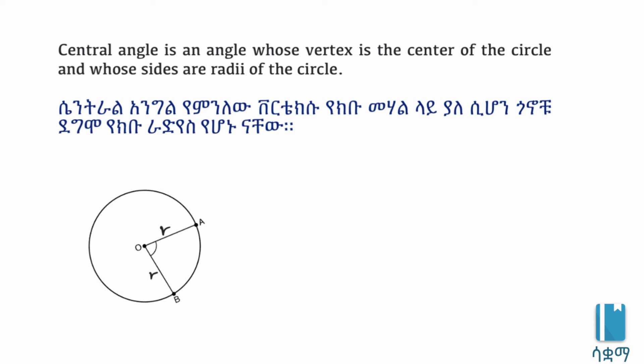Rather than just the radius, it is the radius of the circle. This is the radius of the circle, which means the vertex will be central to the circle. The point is the center of the circle — the central angle definition here.